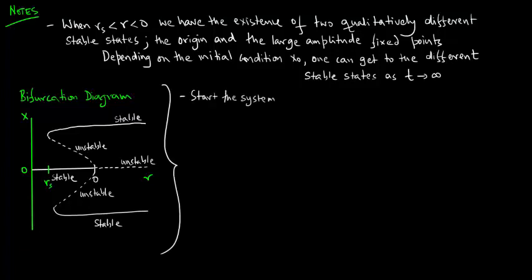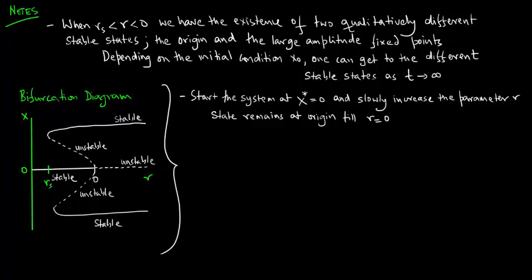As r increases further, the state moves out along the large amplitude branch. Depending on the initial condition, one can get to the different stable states as t tends to infinity.